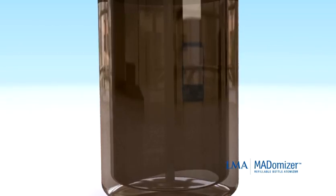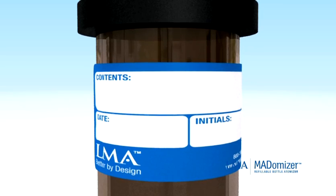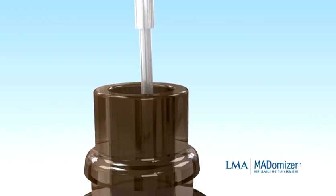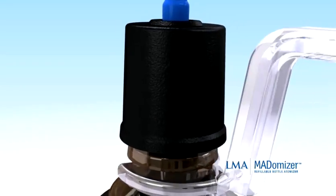To prepare the MADomizer bottle, fill out and attach the provided label to the refillable bottle. Unscrew the pump from the bottle and fill it with the desired topical medication. Thread the pump hand-tight onto the bottle.